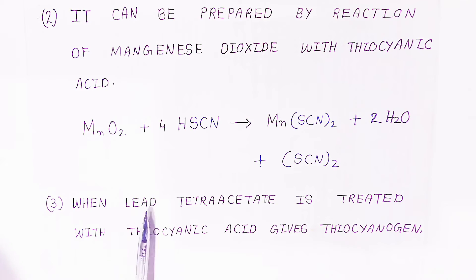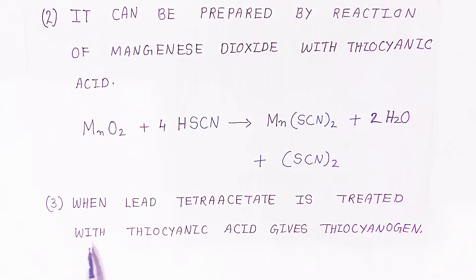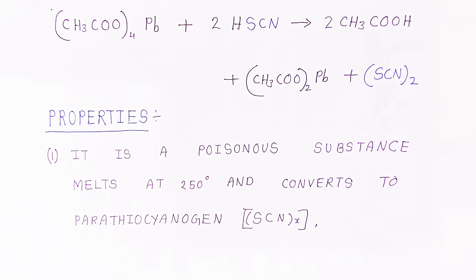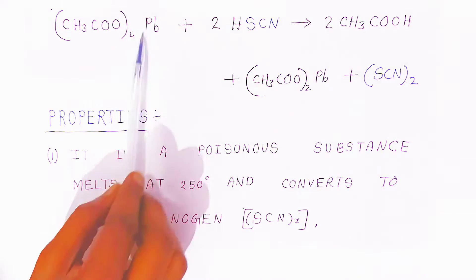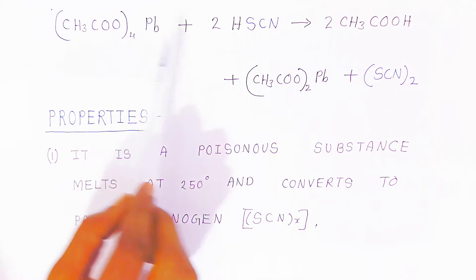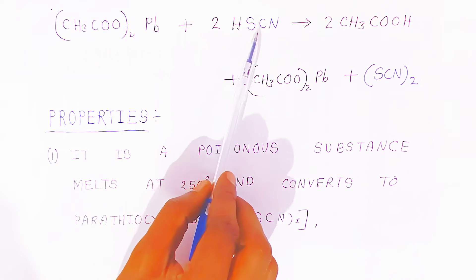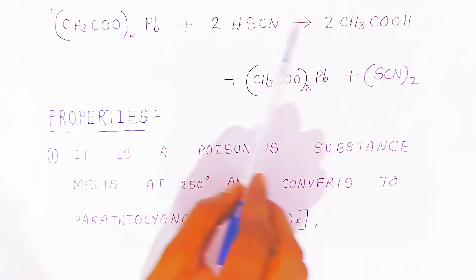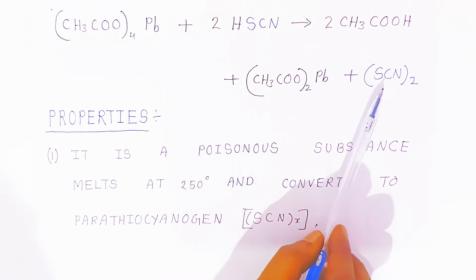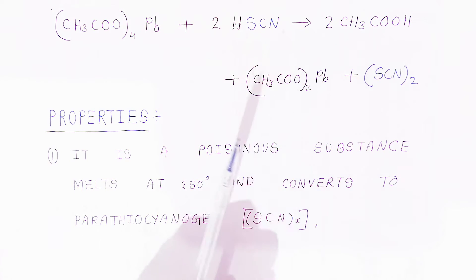Third preparation: lead tetraacetate treated with thiocyanic acid gives thiocyanogen. Lead tetraacetate combined with thiocyanic acid gives acetic acid, lead acetate, and thiocyanogen.